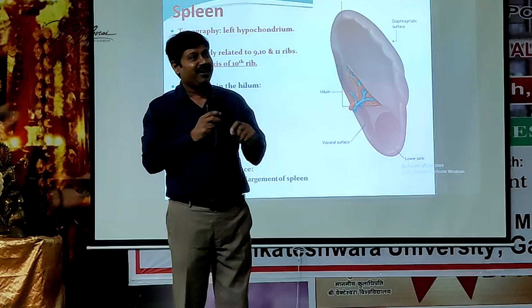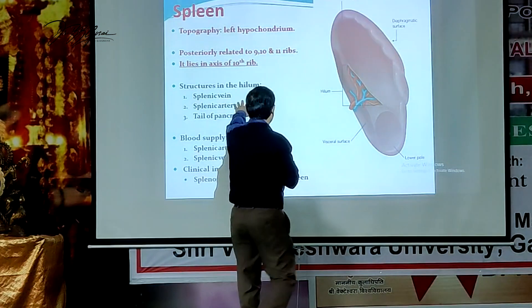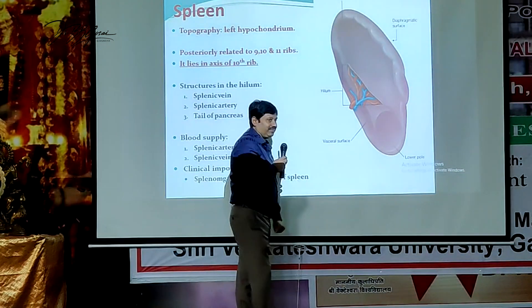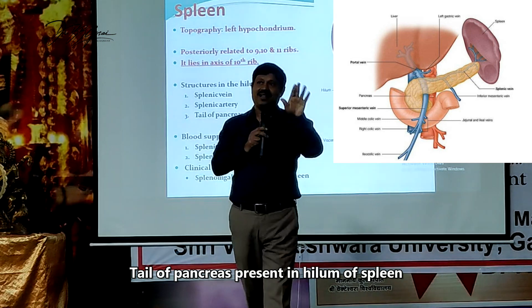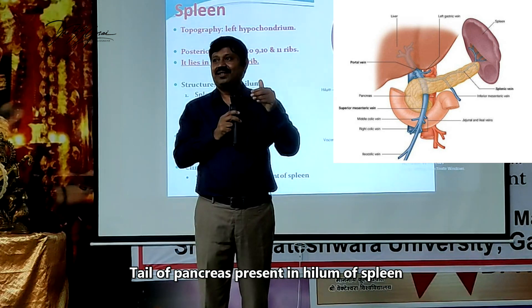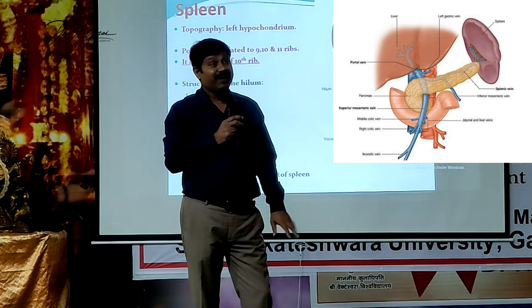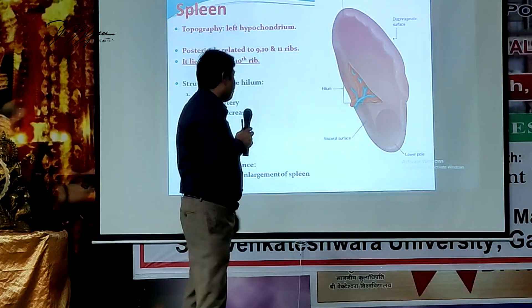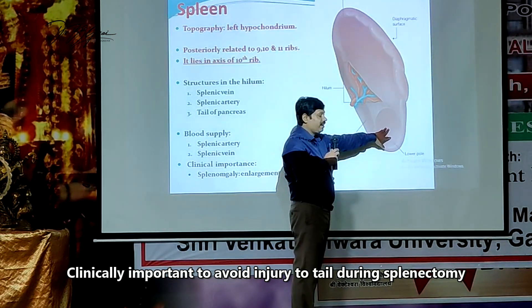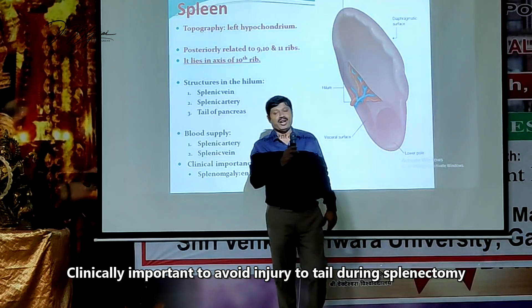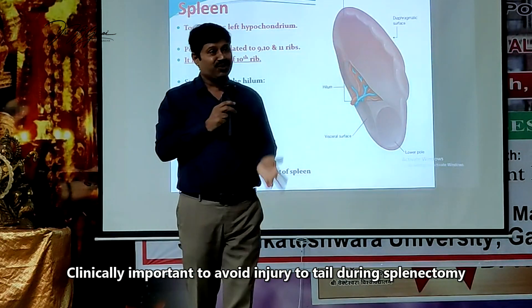Once you mention the portal vein, there are many follow-up questions. The tail of the pancreas is located in the hilum of the spleen. Clinically, if the spleen is ruptured or damaged due to trauma and you want to remove it, we call that a splenectomy — removal of the spleen.